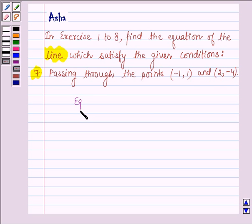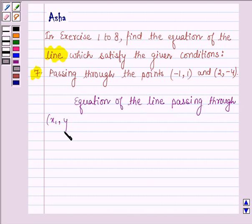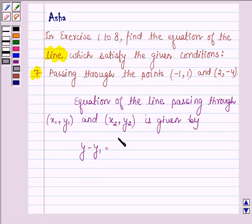First, let us learn the equation of a line passing through two given points. The equation of the line passing through (x₁, y₁) and (x₂, y₂) is given by: y - y₁ = (y₂ - y₁)/(x₂ - x₁) times (x - x₁).